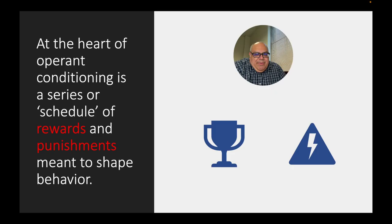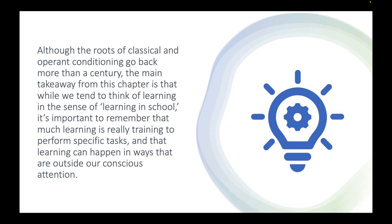At the heart of operant conditioning, again, this is the B.F. Skinner, Edward Thorndike school of, also called control learning in Levy's text. You have this series of rewards and punishment that are meant to shape behavior. The roots of classical and operant conditioning go back more than a century by this point. But the main takeaway that I want you to have from this chapter is that we tend to think of learning in the sense of learning in school, formal schooling, formal education. But it's important to remember that a lot of learning is really training to perform specific tasks. And that learning can happen in ways that often are outside of our conscious attention. Nonetheless, they are very important to who we are, to our ability to survive as human beings. We'll dig more into this concept of different kinds of learning in the next chapter.